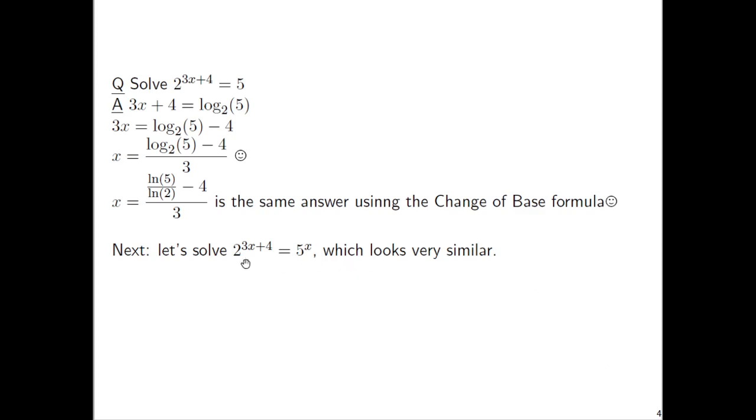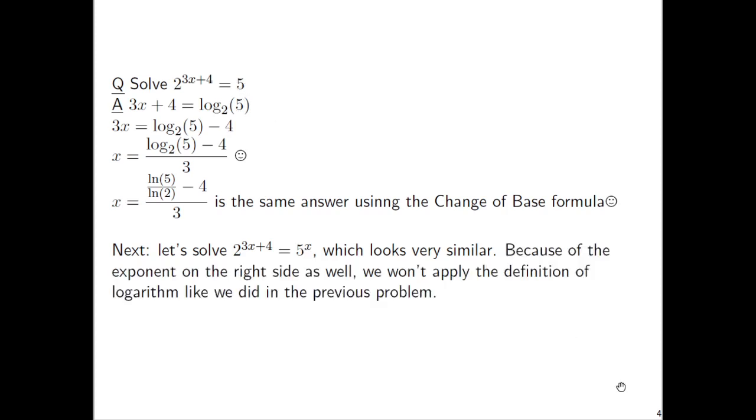Now, let's solve the equation 2 to the power 3x plus 4 equals 5 to the x, which looks very similar to the equation that we just solved. You'll notice that the only difference is on the right side, it's not just a 5 anymore, but it's 5 to the x power. The thing is, in the last problem, it was super convenient to use the definition of logarithm because we just had a constant on one side. Now, that's not going to work out so well, because of the exponent on the right side as well, we won't apply the definition of logarithm like we just did. We're going to do something else.